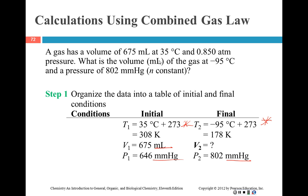So if you've got 675 milliliters at 35 degrees C and 0.85 atmospheres, so we've got three parameters this time. What is the volume, because we can only be looking for one thing, of the gas at minus 95 degrees C and a pressure of 802 millimeters of mercury? Notice that our pressure up here is in atmospheres, and down here is in millimeters of mercury. It doesn't matter which one you change them to, but they both have to be in the same units.